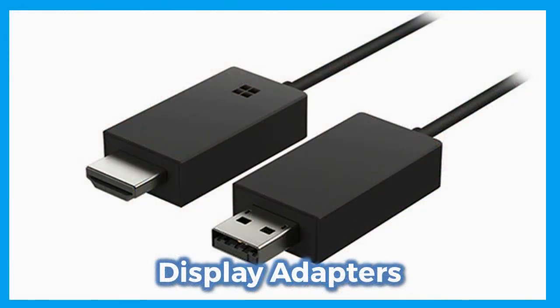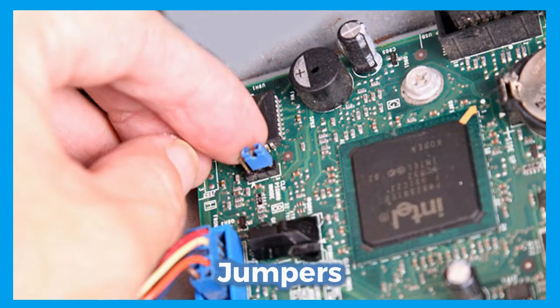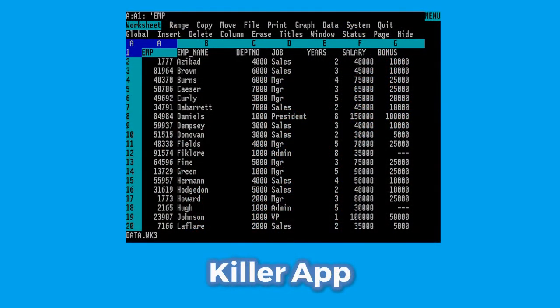Display adapters provide a link between the CPU and monitor and convert binary information into human-readable forms. Jumpers are small metal conductors which act like an on/off switch and are typically made from a small piece of metal and two wires. They are found on motherboards, printed circuits, modem hard disk controllers, and so on.